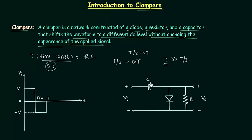Let's solve this basic clamper circuit example. We have one capacitor with capacitance C, a diode, resistance R, and the output voltage VO is measured across the resistance R. VI is the input voltage. For the first half cycle, from 0 to T/2, the input voltage VI is equal to positive V.